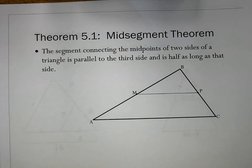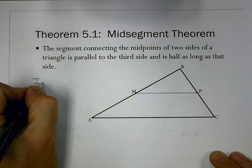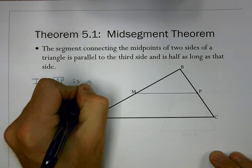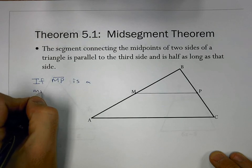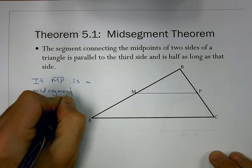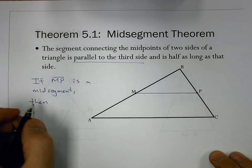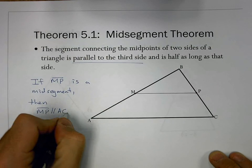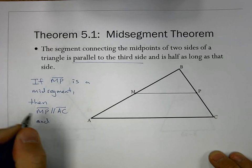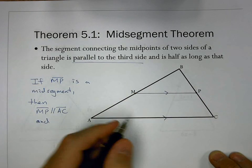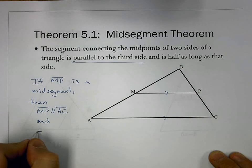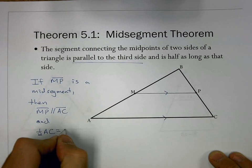Next we go to the mid-segment theorem, which is where we actually apply it. The mid-segment theorem says the segment connecting the midpoints of two sides of a triangle is parallel to the third side and is half as long as that side. So if MP is a mid-segment, then we know two things: first, that it's parallel to the third side, and second, it's half as long as the other side AC. So we would say one-half AC equals MP.